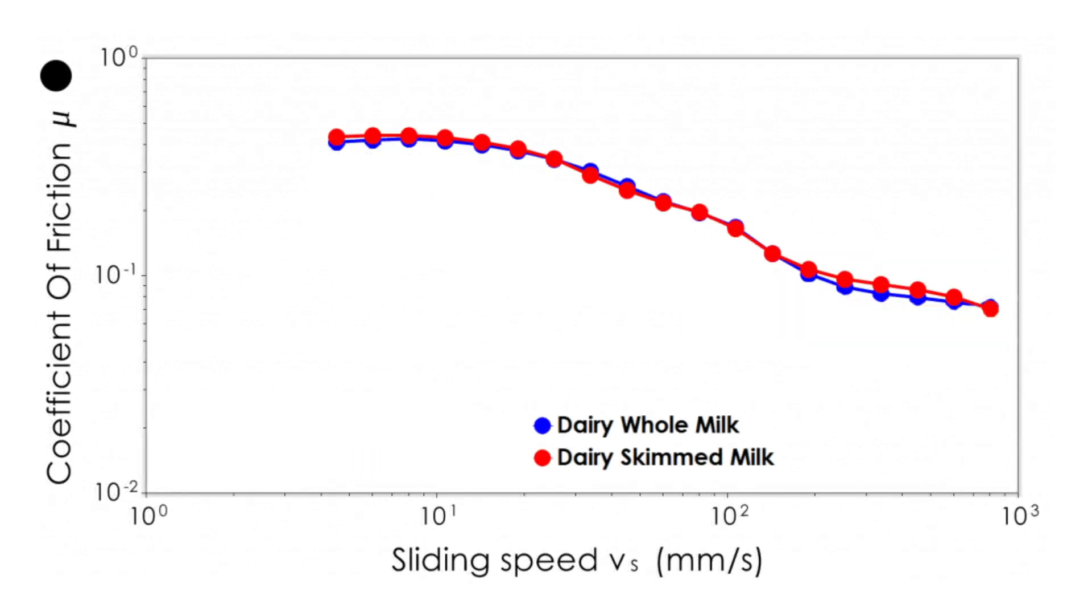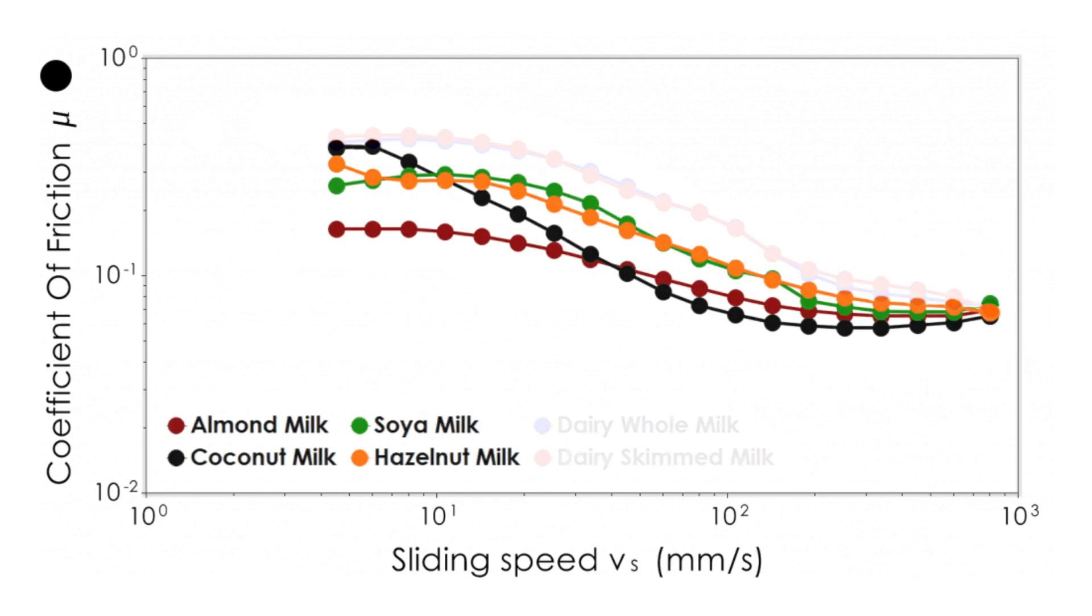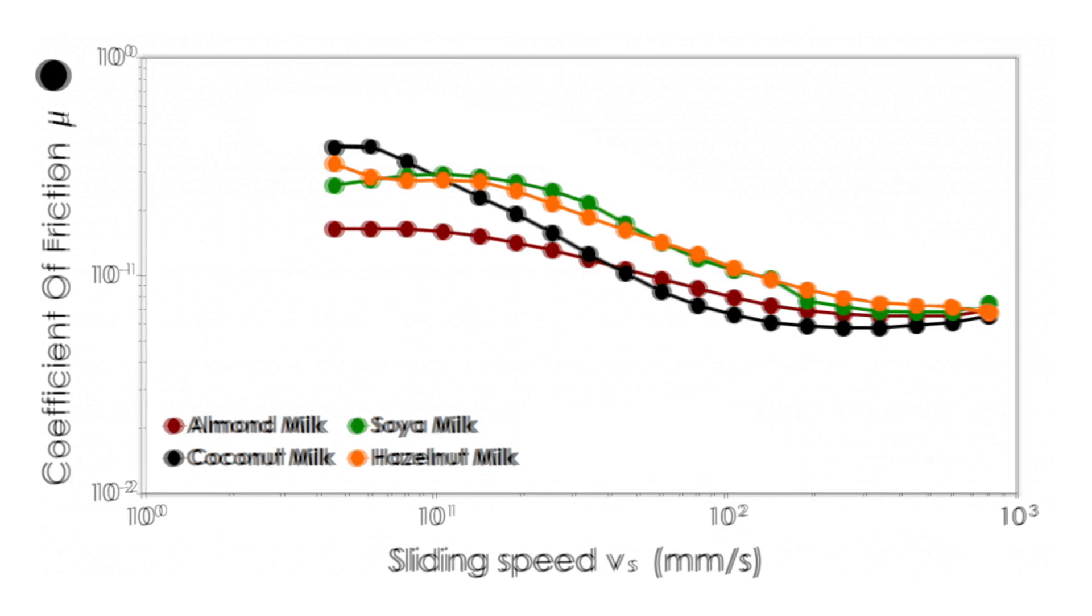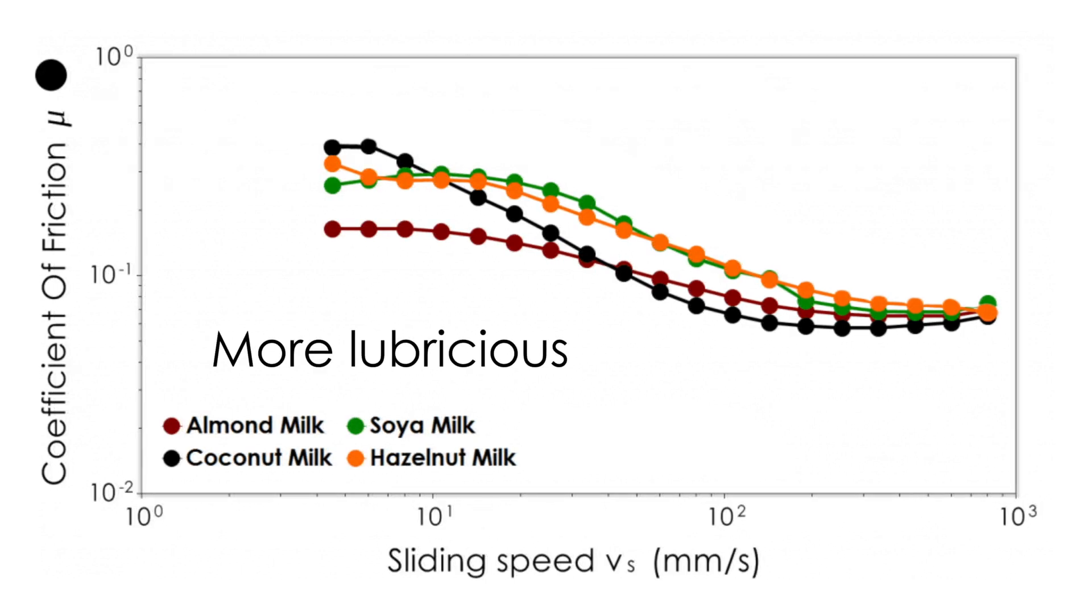The dairy-based milks both show the highest coefficient of friction over the shear rates tested, whereas plant-based milks show a much lower coefficient of friction. This means that plant-based milks can be classified as being much more lubricious than dairy-based milks.